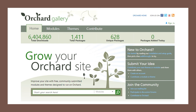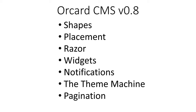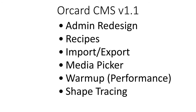On version 0.8, the Orchard project team added shapes, placements, Razor functionality, widgets, notifications, the theme machine, and pagination. On version 1.1, they redesigned and added recipes, import/export, media picker, warm-up for performance, and shape tracing.